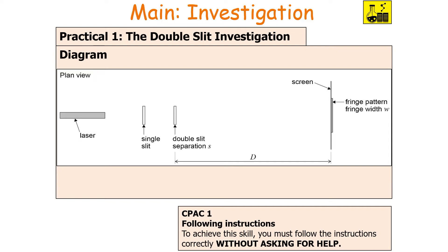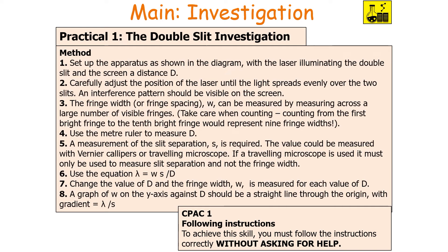Set up your apparatus with the laser, then the single slit (which you may not need with a laser), then the Young's double slit, and then the white screen to produce the fringe pattern. Illuminate the double slit with the laser and carefully adjust its position until the light spreads evenly over the two slits, producing an interference pattern. The fringe width W can be measured across a large number of visible fringes — counting from the first bright fringe to the end, noting that nine gaps exist between ten bright fringes.